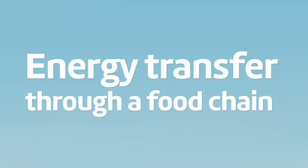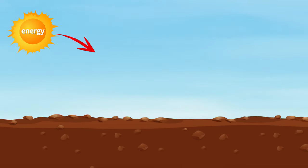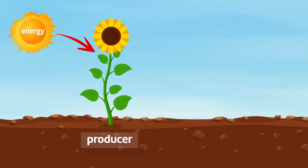Let's look at how energy is transferred through a food chain. Energy from the sun is harnessed by producers, such as this plant, through photosynthesis.